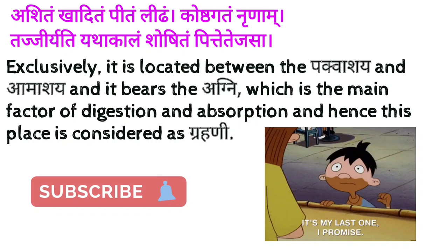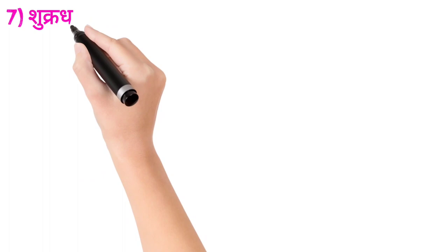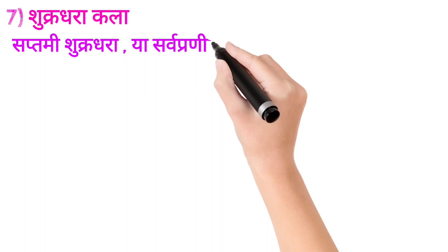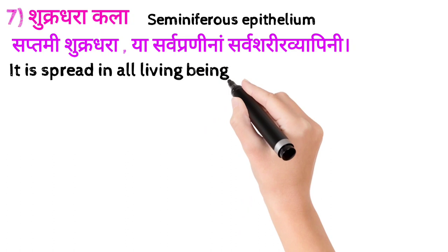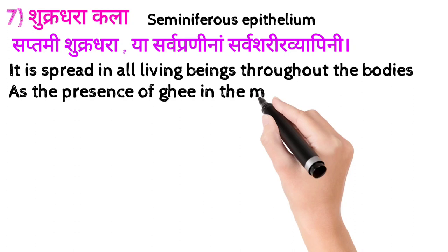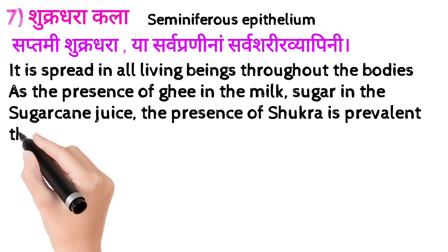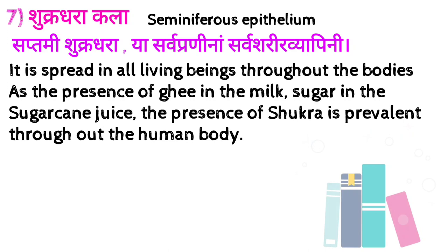Our last Kala is Shukra Dharakala. Its shloka — 'Saptami Shukradhara, Ya Sarva Prani Naam Sarva Shareer Vyapini' — says this Kala can be correlated with the seminiferous epithelium. It spreads in all living beings throughout the body. As the presence of ghee in milk or sugar in sugar cane juice, the Shukra is prevalent throughout the human body. Please subscribe the channel, like the video, and go through the description to check our Telegram channel and Instagram page. Stay tuned, thank you for watching.